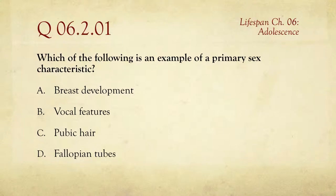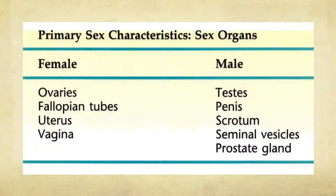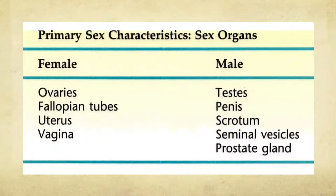The answer is fallopian tubes. We're talking about primary sex characteristics — the sex organs. For females, that includes ovaries, fallopian tubes, uterus, and vagina. For males, the testes, penis, scrotum, seminal vesicles, and prostate gland — the things that are always there and biologically define a person as male or female.